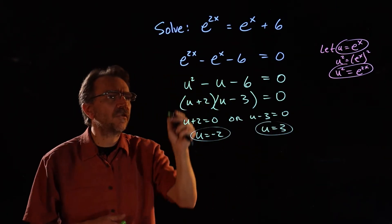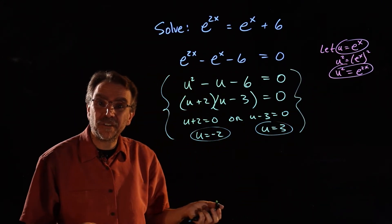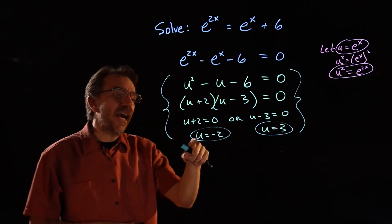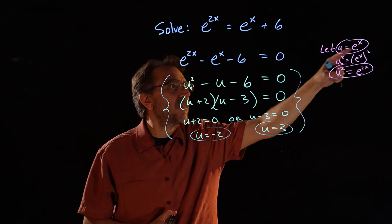So there's two solutions for u. Thing is, we're not really solving for u, right? We're solving for x. So now what we're going to do is back substitute. We know u is e to the x.